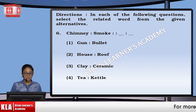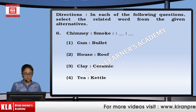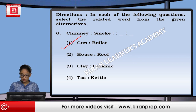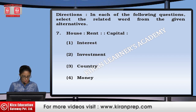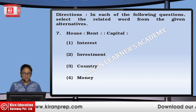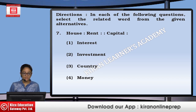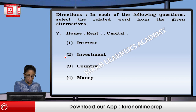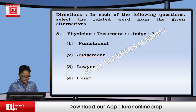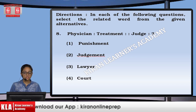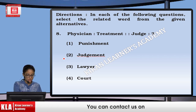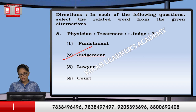Next, chimney is to smoke — smoke comes out of the chimney. Similarly, a bullet comes out of the gun, so the answer is the first one. Next, a house is lent on rent — we get rent from the house. Similarly, capital is lent for interest. Then, treatment is done by the physician, so judgment will be done by the judge.